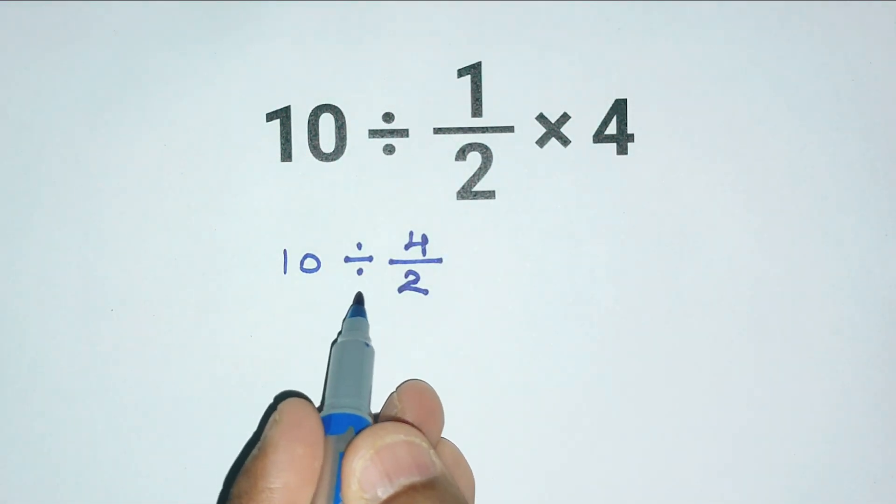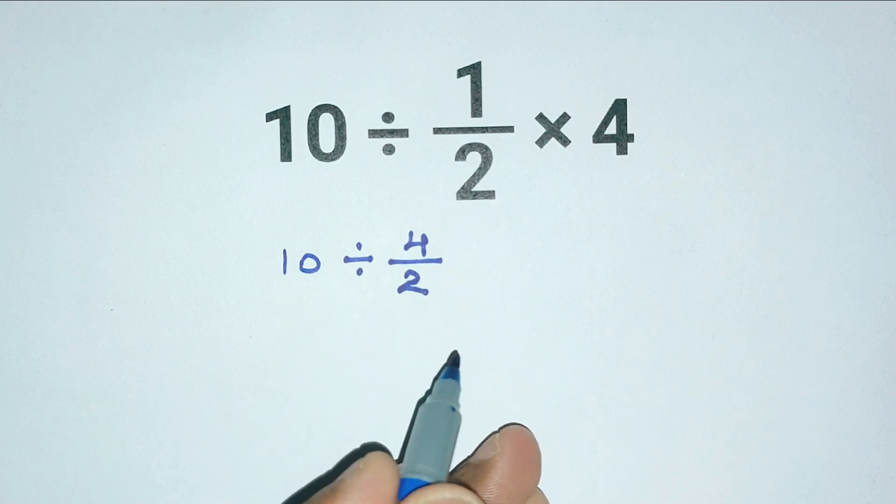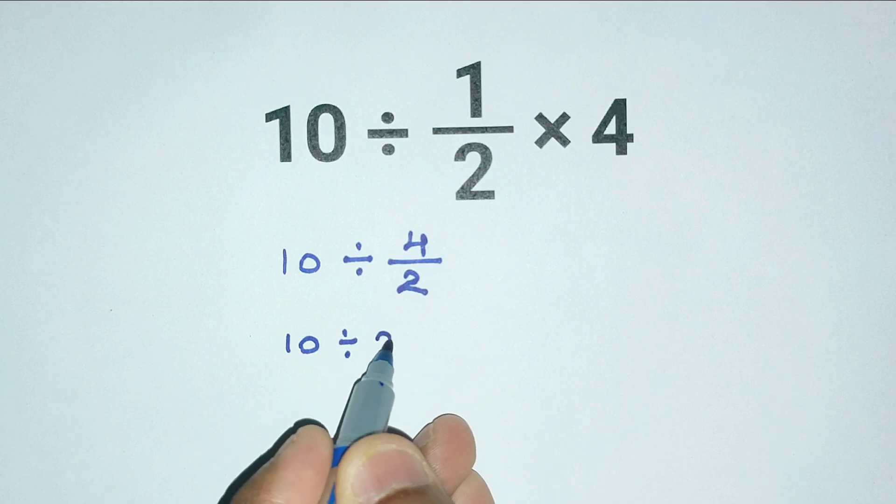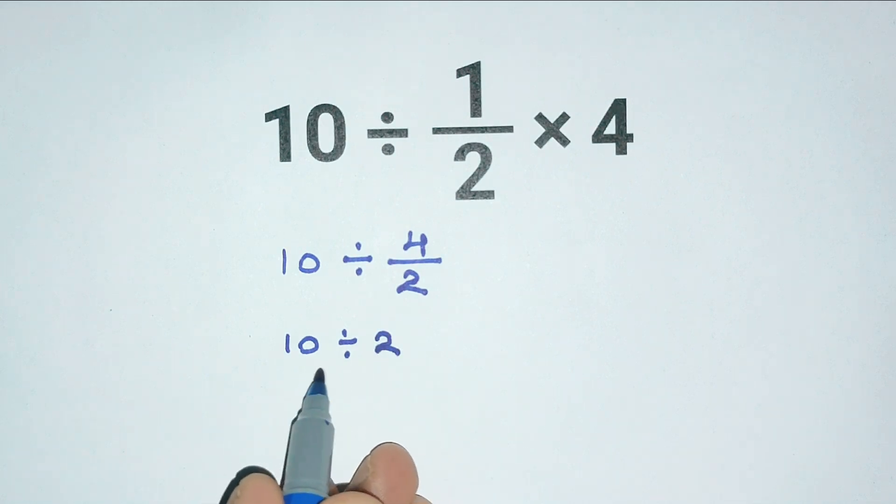4 divided by 2 equals 2, so they say 10 divided by 2 equals 5. But that's actually wrong.